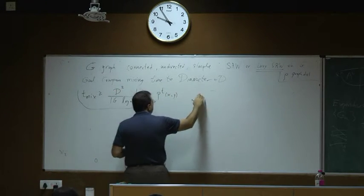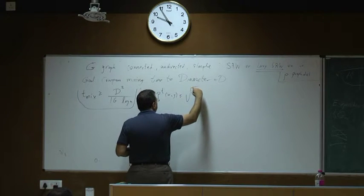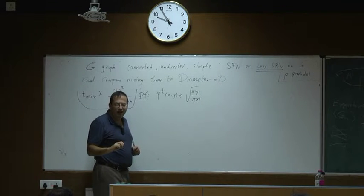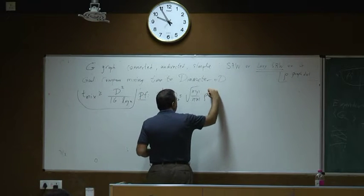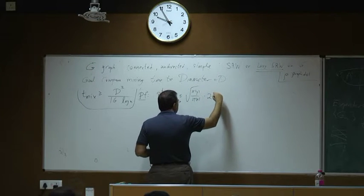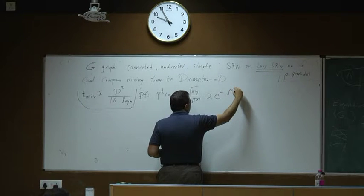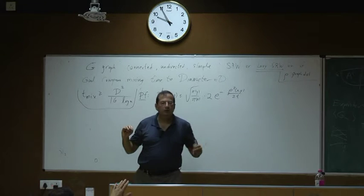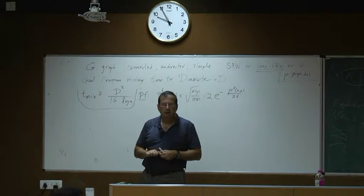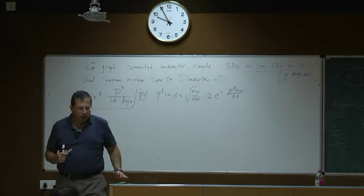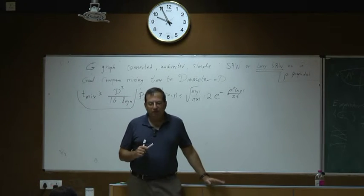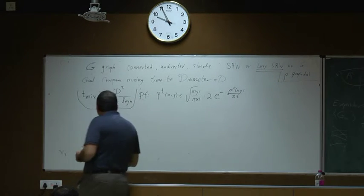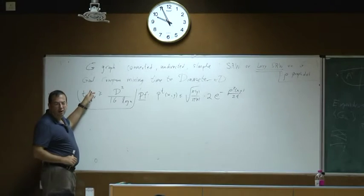The Varopoulos-Carne bound says P_t(X,Y) ≤ √(π(Y)/π(X)) · e^(−ρ²(X,Y)/(2t)). This is more general than what I proved; I assume you've all looked in the lecture notes for the general proof. In our graph case, for simple random walk, this becomes 2√N · e^(−ρ²(X,Y)/(2t)), since the ratio of degrees is at most N. T_mix is for a fixed epsilon — when I write T_mix without specifying ε, I mean ε = 1/4 by convention.